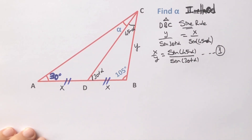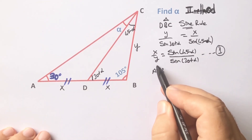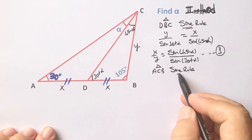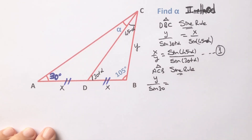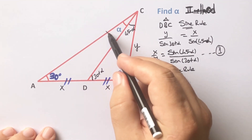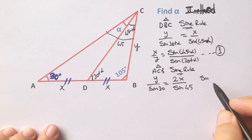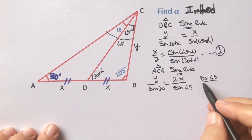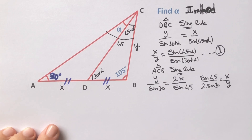Now if you focus on the biggest triangle, let's apply the sine rule for the biggest triangle: y over sine 30 equals 2x over sine 45. Here is 45 degrees. Then sine 45 over 2 times sine 30 equals x over y. This is the second equation.